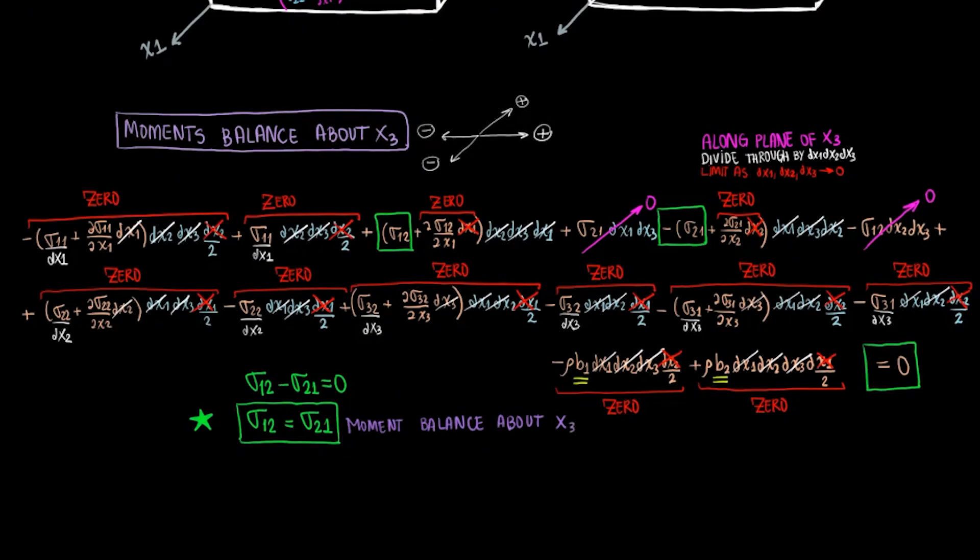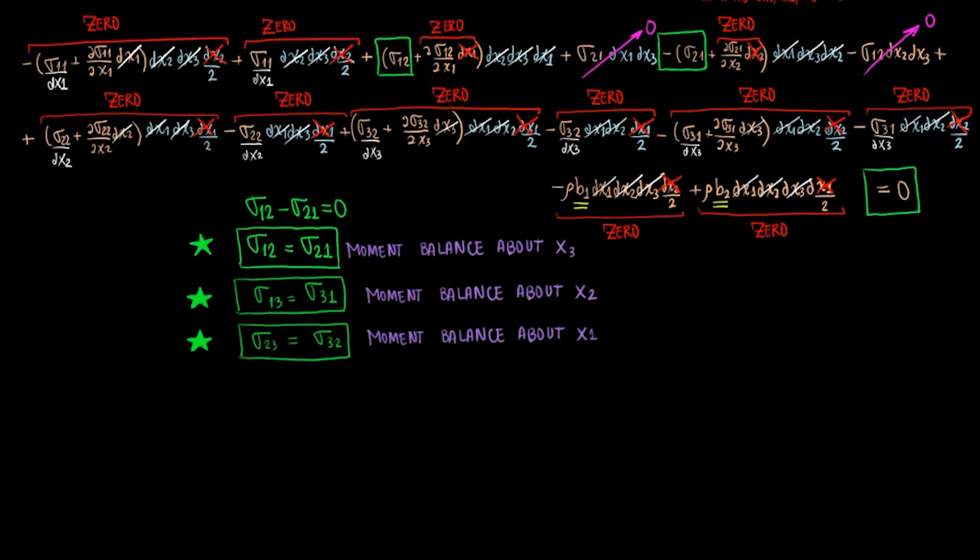When you take the moments about x1 and x2, you end up reaching very similar results. You learn that sigma 23 equals sigma 32, and that sigma 13 equals sigma 31.